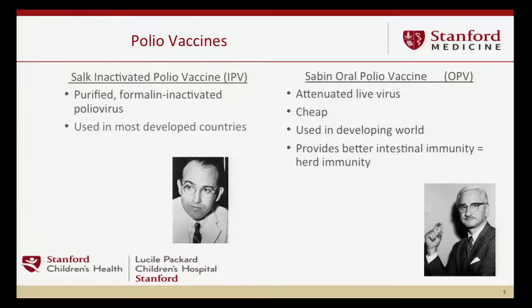These are the major mutations thought to result in attenuation at the IRES binding site, which can lead to reduced virulence. Paradoxically, the attenuations can be overcome so that in live vaccines you can actually see vaccine-associated paralytic polio. There are two major vaccines. The first is the Salk inactivated polio vaccine—a purified, formalin-inactivated viral product used in most developed countries. It's more expensive than the live vaccine but does not primarily produce gut immunity, and that remains an important open question.